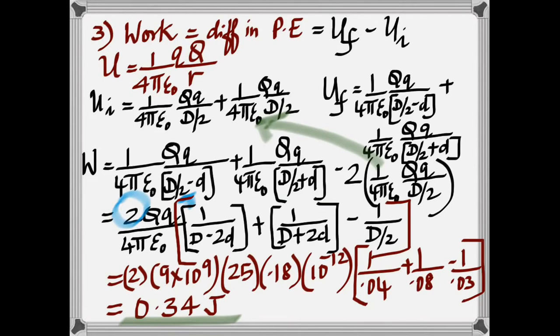In number three, you have two cases here. And you have to find the work required in moving the 0.18 micro coulomb from midway to a 0.1 centimeter closer to either of the charges. So what you do first is you find the potential energy of the initial configuration, which is Ui, and then find the potential energy of the final configuration, Uf.